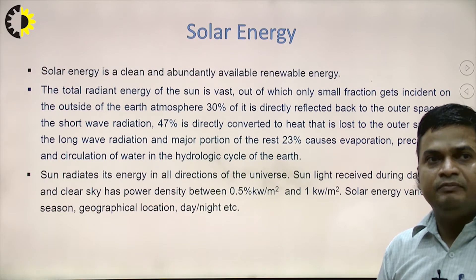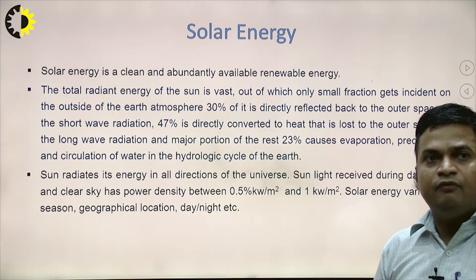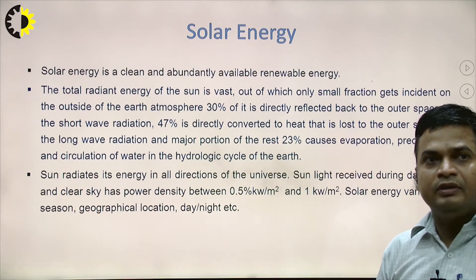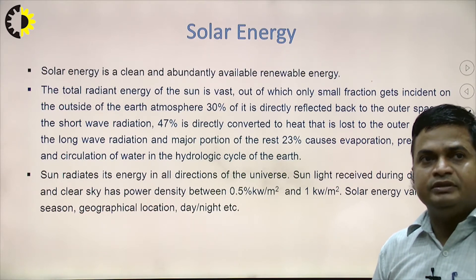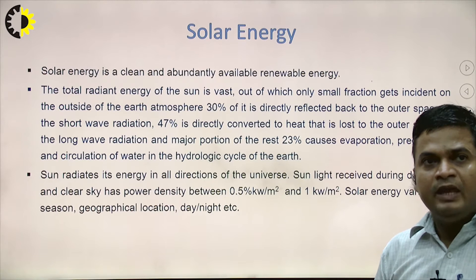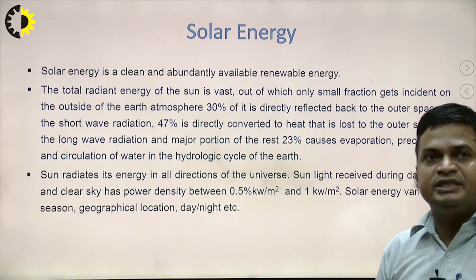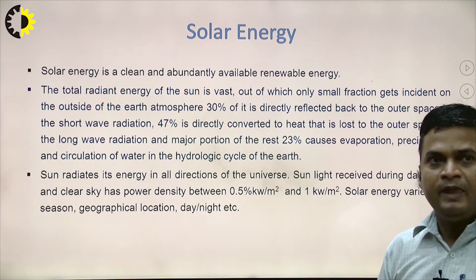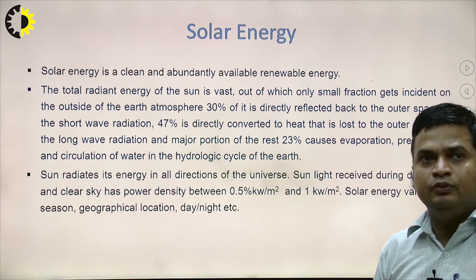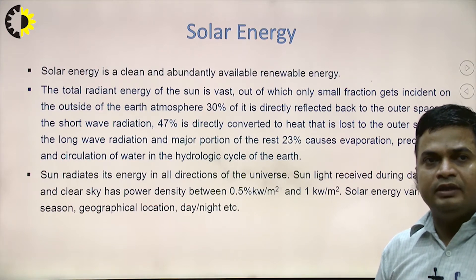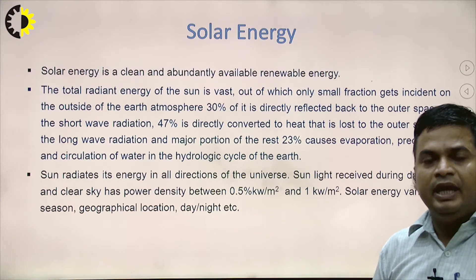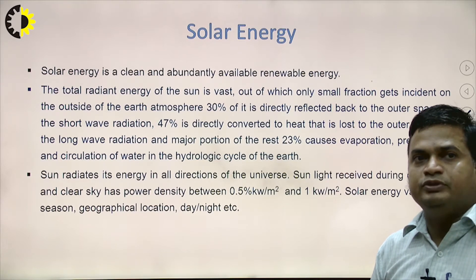Similarly, the air present close to the surface of water is also heated. However, the air close to the surface of the earth heats up much more rapidly than the air close to the surface of water. Therefore, a flow of air current is created, a pressure difference is generated, and wind is produced. This wind rotates the blades of a turbine, and electricity is produced through the generator.